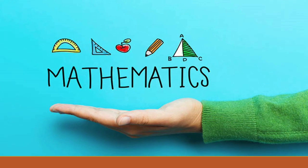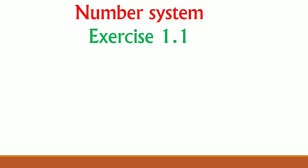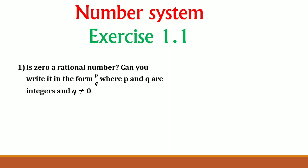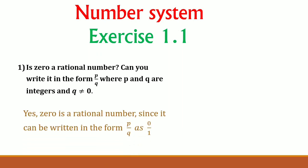Welcome back to our mathematics session on number systems. The first question in Exercise 1.1 reads: is zero a rational number? Can you write it in the form p upon q, where p and q are integers and q is not equal to zero? The answer is yes. Zero is a rational number since it can be written in the form p upon q as 0 upon 1.